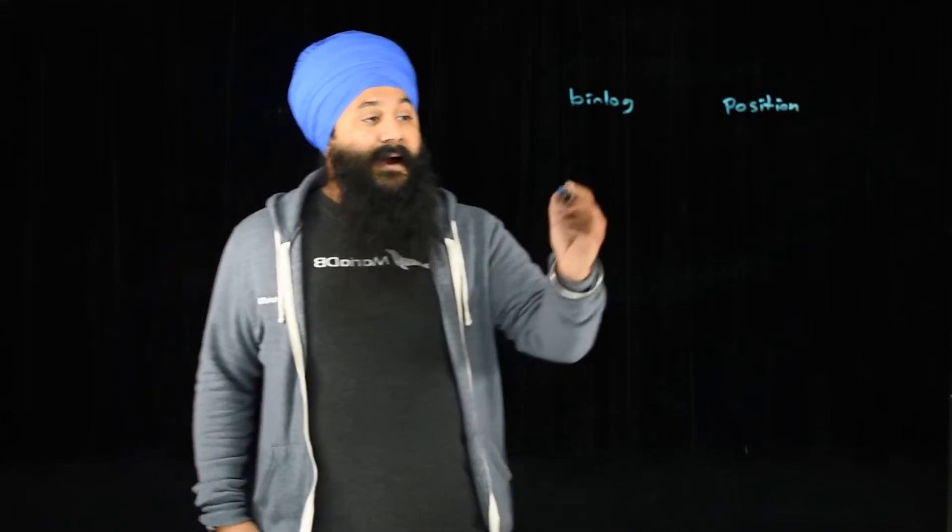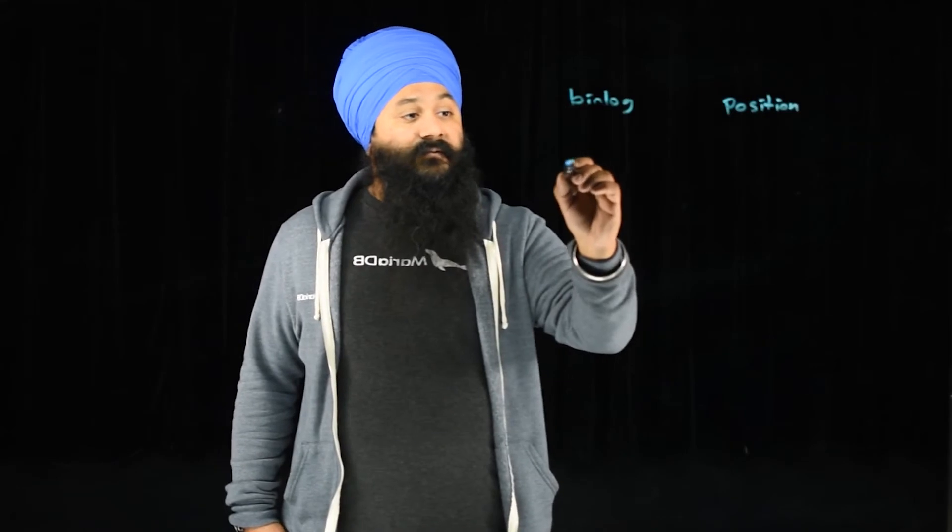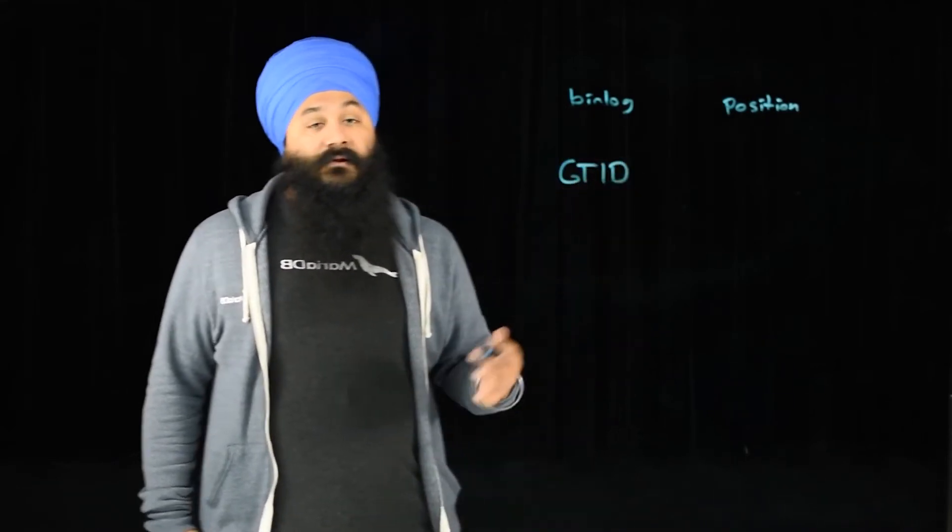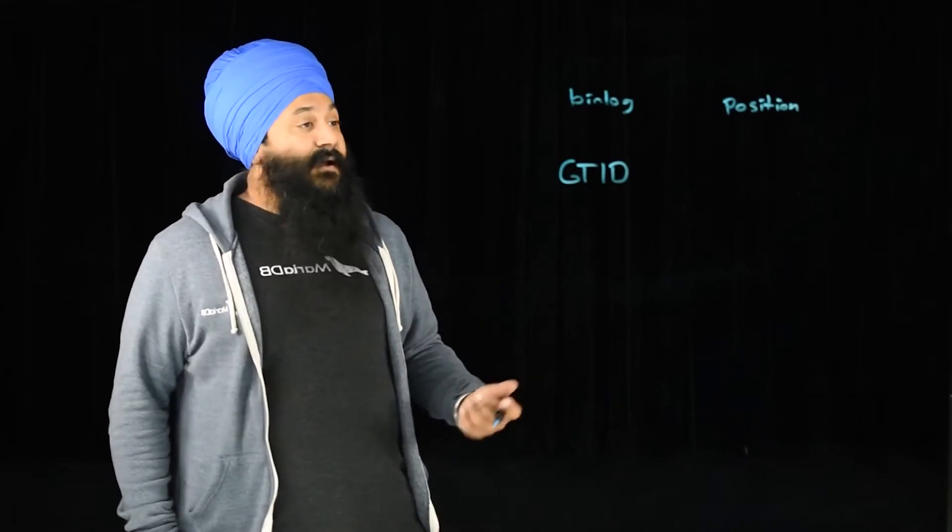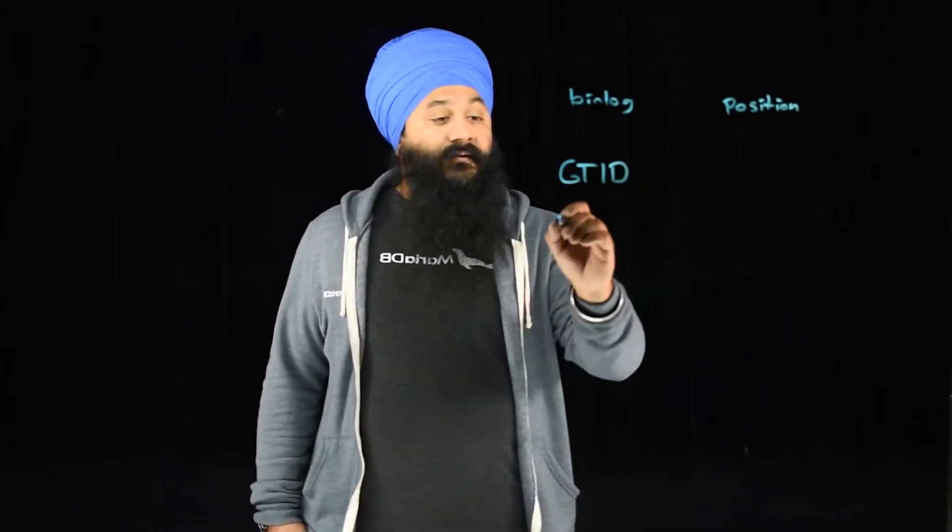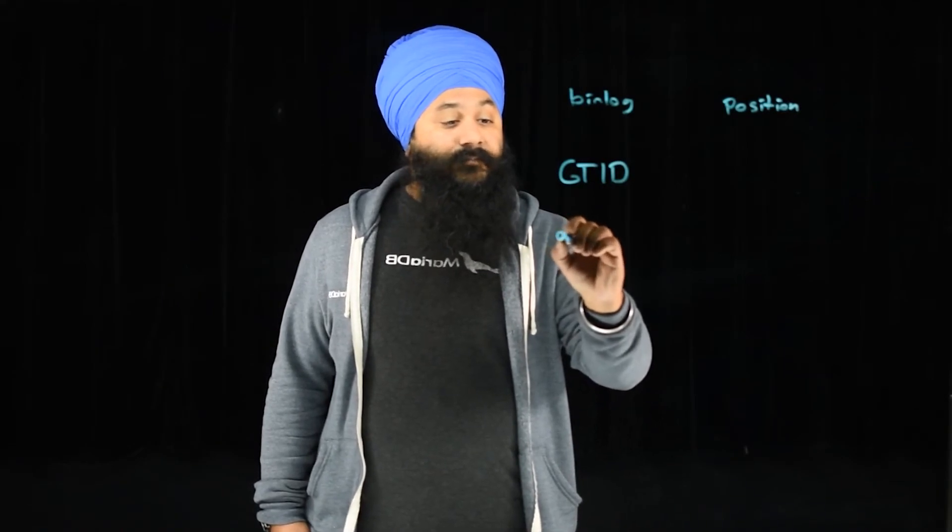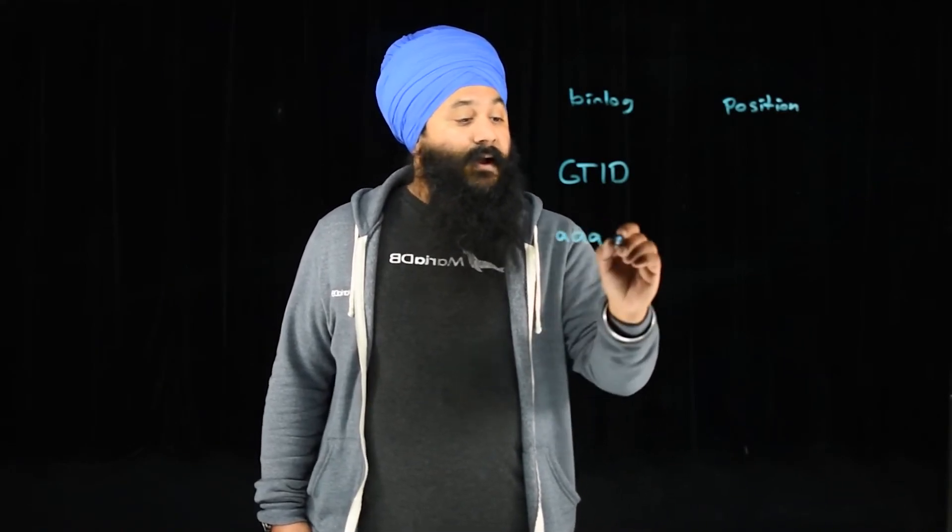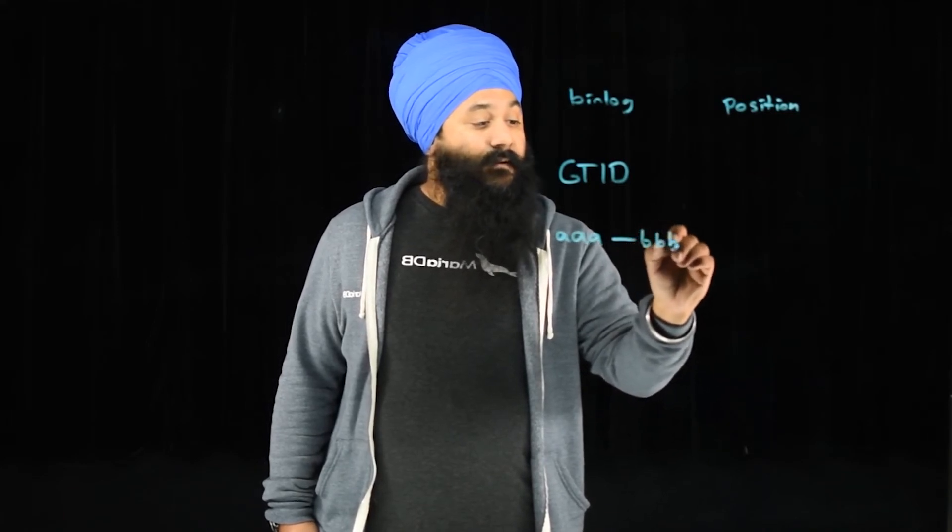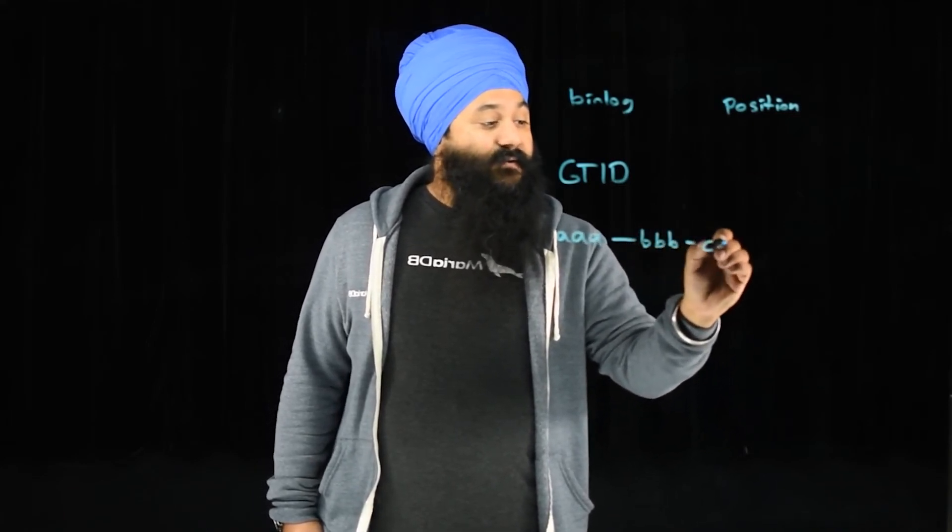Now what we have since MariaDB 10.0 is a concept of GTID, and GTIDs are basically a global transaction identifier. The GTID will be composed of a domain ID, so it'll have some number followed by a server ID followed by a sequence number.